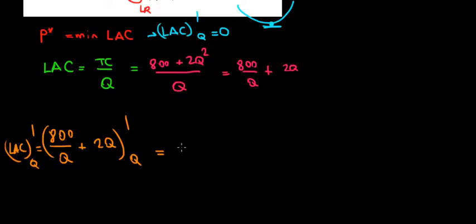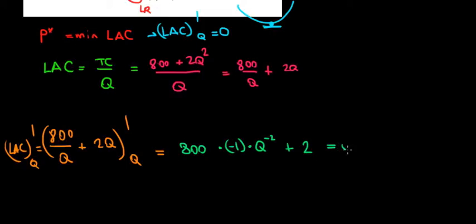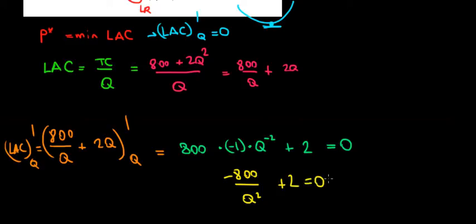800 is a constant, so 800 times Q to the power of minus 1, whose derivative with respect to Q is minus 1 times Q to the power of minus 2 by the power rule. Plus the derivative of 2Q is just 2. Setting this equal to zero gives us minus 800 divided by Q squared plus 2 equals zero.